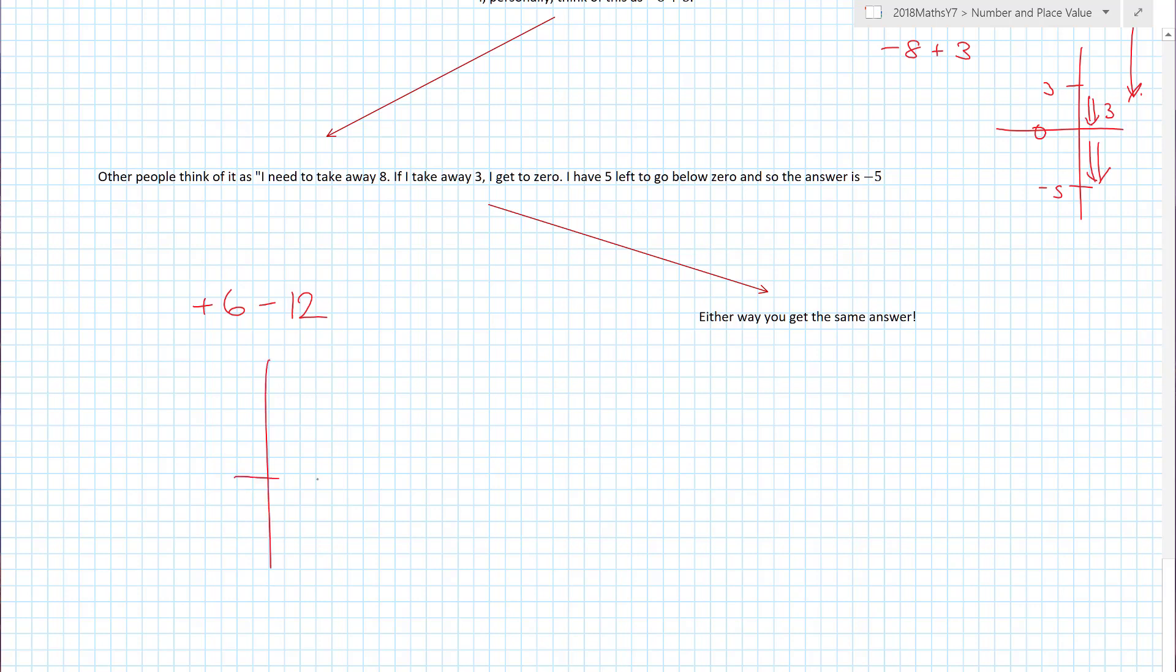Quick number line. There is zero. Where am I starting? I'm at six. I've got to move twelve places down. So to get from six to zero, I'm moving six of those twelve places. How many do I have left? Well, another six, which would mean I'd have to move six places below zero, which would then give me minus six.